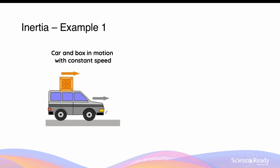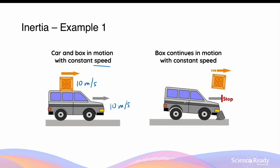Let's look at a few more examples of inertia or Newton's first law. Let's say you have a car traveling towards the right at constant speed, and on the roof of this car there's a box with no straps fixing it onto the roof. The box is also moving to the right at the same speed as the car — let's say 10 meters per second. When this car suddenly brakes and comes to a stop, the box that was originally sitting on the roof will continue to travel at 10 meters per second because it is not acted upon by any external forces.